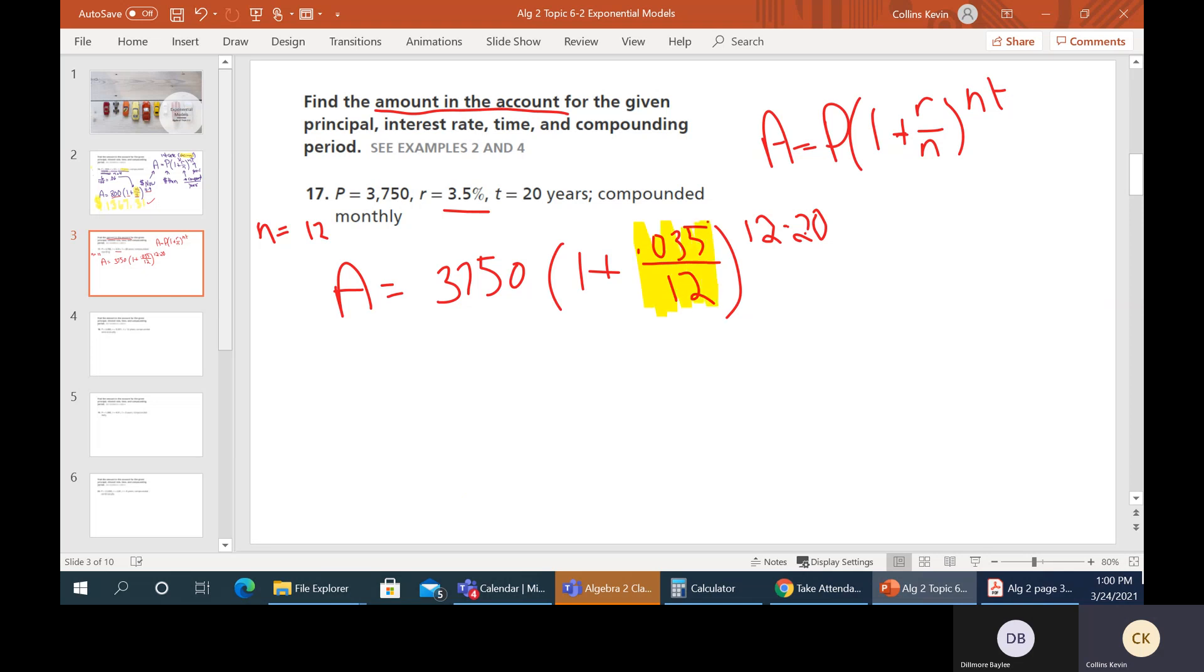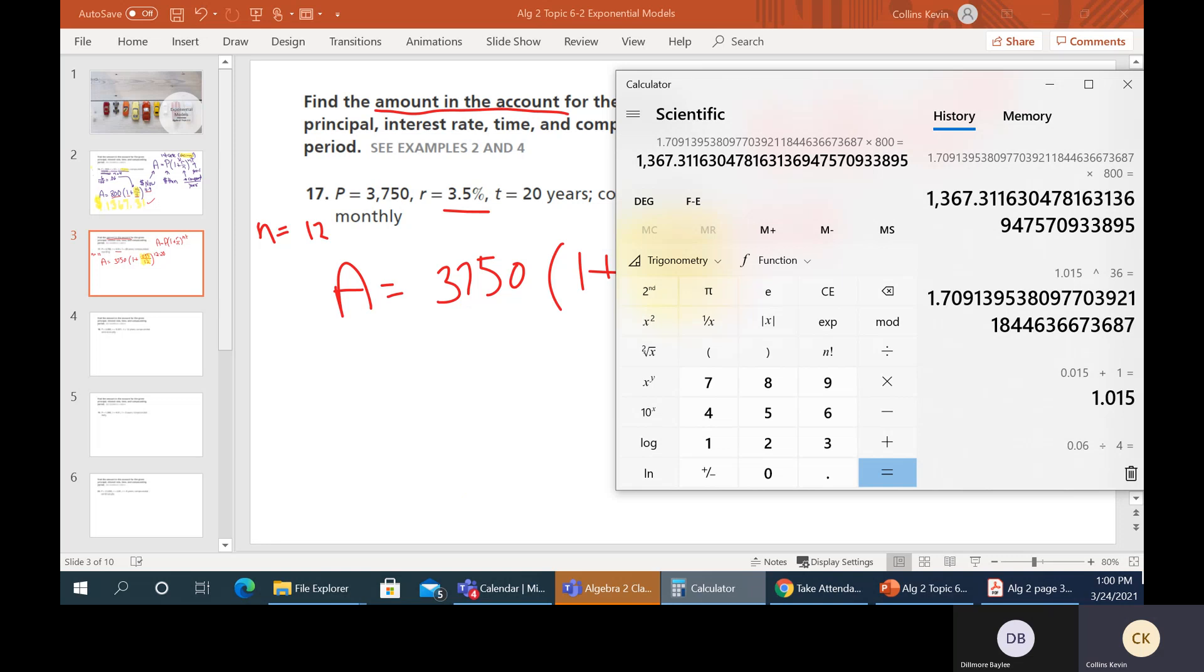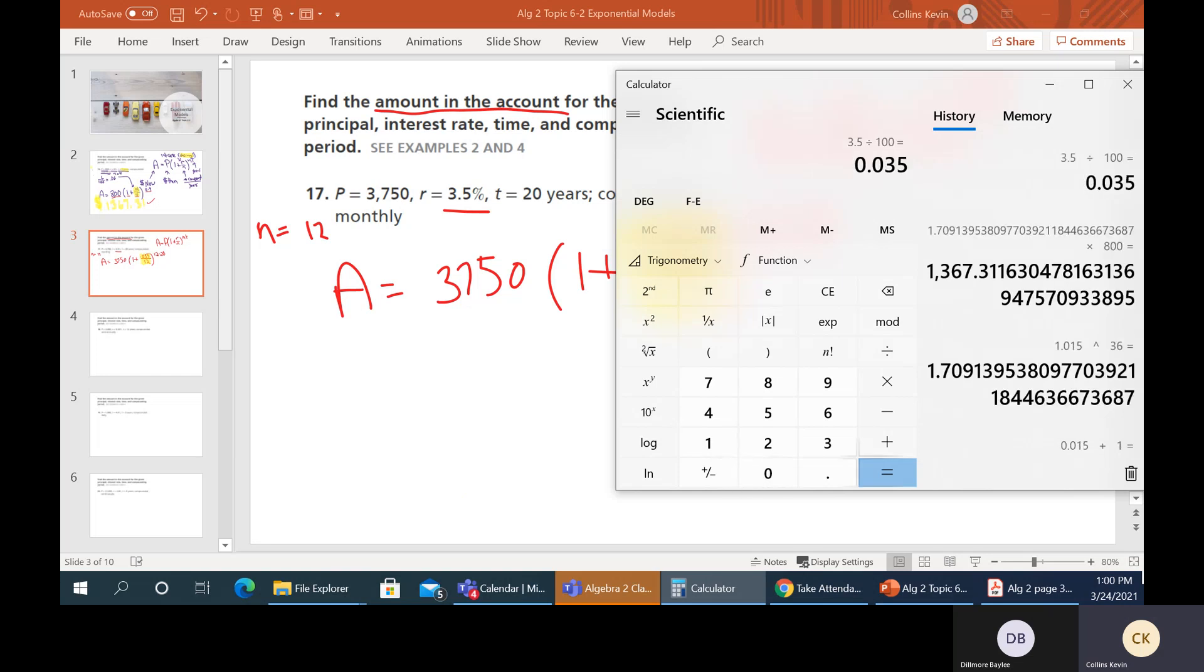All right, so again, we are looking for the amount in the account. So that's the A value. So A is going to equal P, which they tell us is 3750. And then times one plus 3.5%. So that's going to be 0.035. Compounded monthly. Well, we know there's 12 months in a year, so that means our N value in this case is going to be 12. So then this guy is over 12. And then finally, we're going to compound our interest 12 times a year and do that over 20 years.